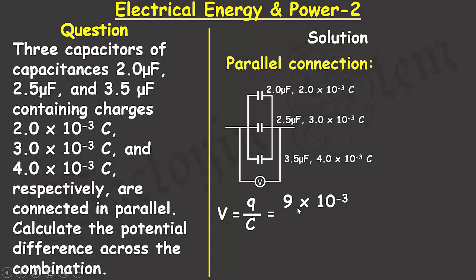So the net charge from the previous slide equals 9 times 10 to the power of minus 3, and the net capacitance of the capacitors was given to me, or rather I got it in the previous slide, as 8 times 10 to the power of minus 6.